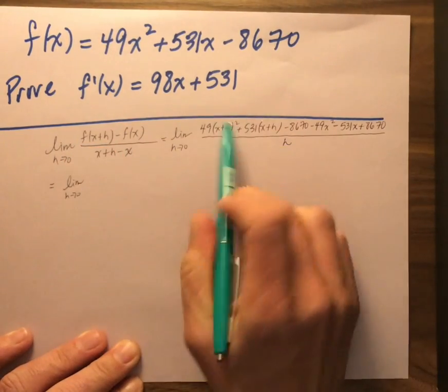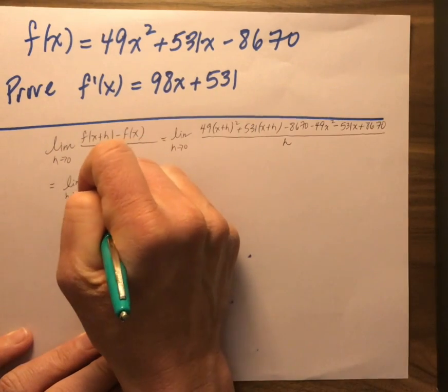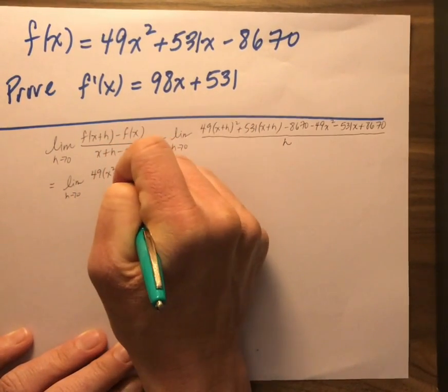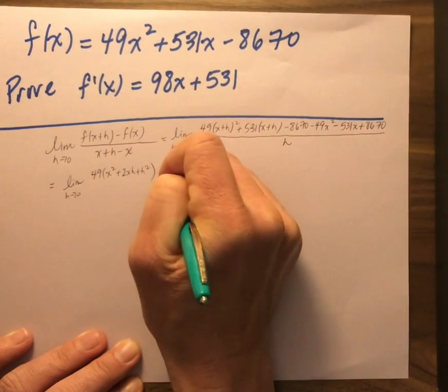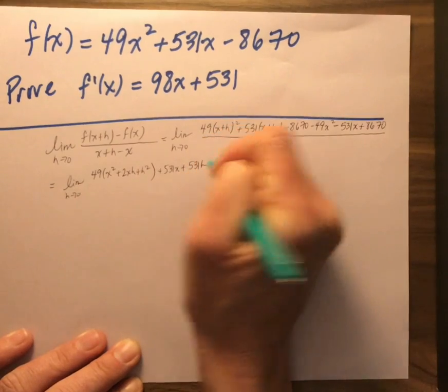So the limit as h goes to 0, I'm going to foil out x plus h times x plus h. And because I am a math magic master, I know this is x squared plus 2xh plus h squared. Distribute the 531x plus 531h.